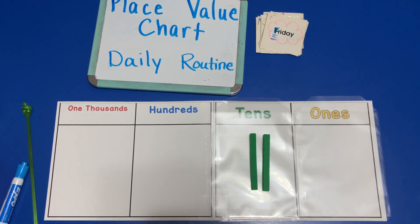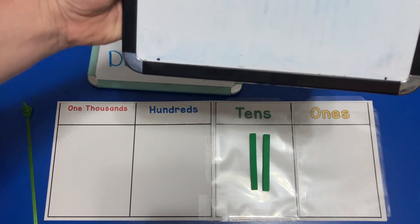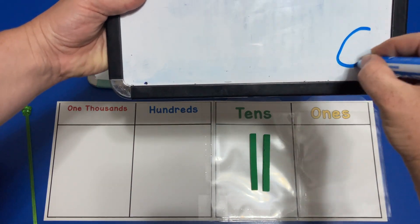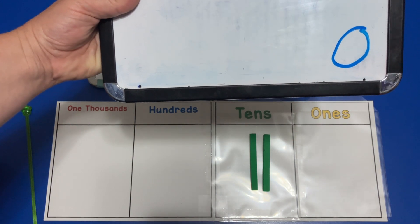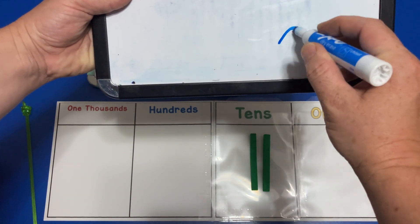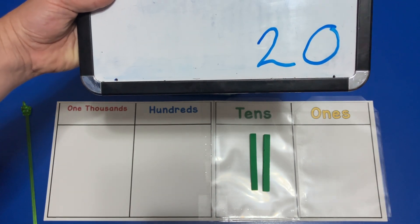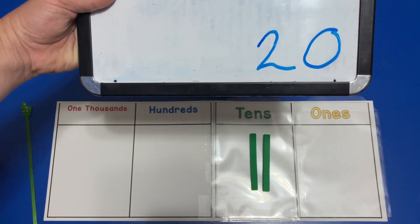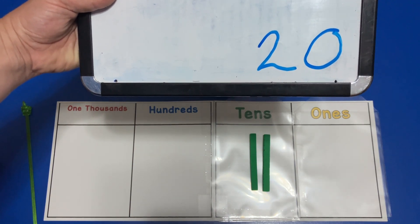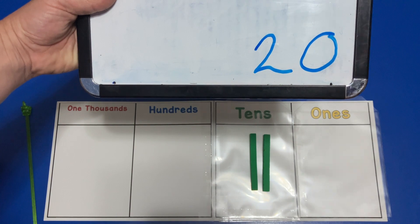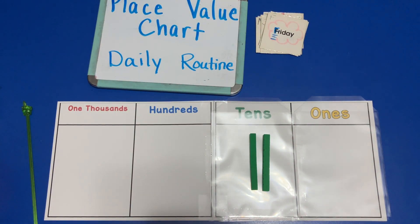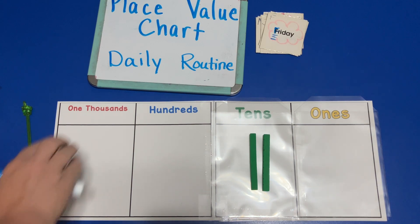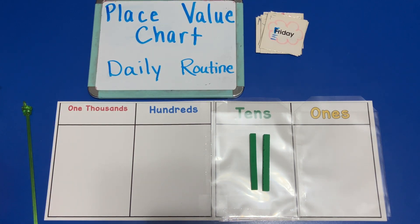Now we can look at what the value of our base-10 blocks are. We look in our ones place and we have zero ones. We look in our tens place and we have two groups of ten. So that means we have the value of 20 on our place value chart — because we have two groups of ten and zero ones. And that is how we use our place value chart to do our daily routine to continue building our knowledge of place value.